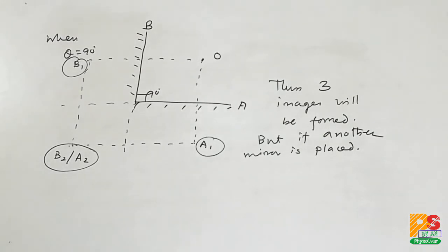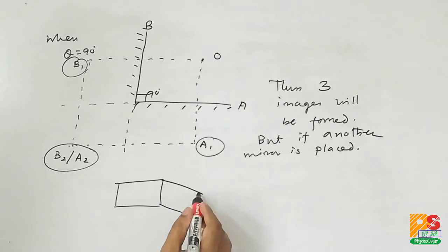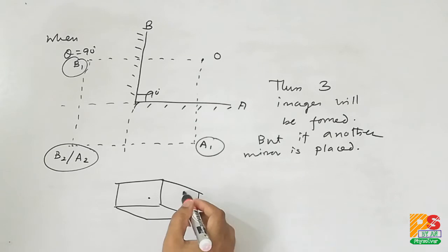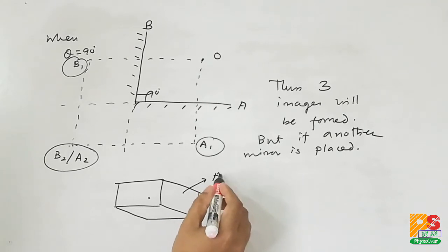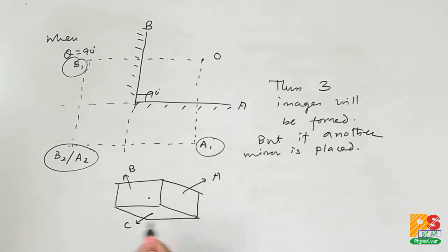The diagram looks like this. These are the two mirrors initially placed perpendicular. This is the third mirror, and an object is placed. This is mirror A, mirror B, and mirror C.